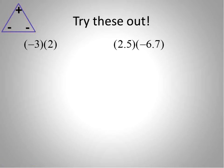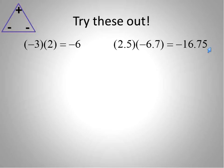Go ahead and try that out — we have our triangle at the top if you want a quick reminder. Did you get negative 6? And did you get negative 16.75? If so, give yourself a pat on the back. You remember that when you're multiplying numbers with different signs, you get a negative result. Both times, you end up with a negative result.